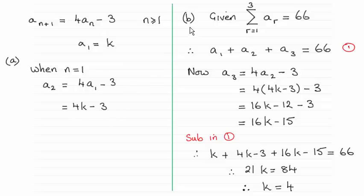So in part b we're given this result here, this summation. Always a good idea to expand this. This is simply a1 plus a2 plus a3. So I've got the terms a1 and a2 in terms of k already over here. But I need to get a3.